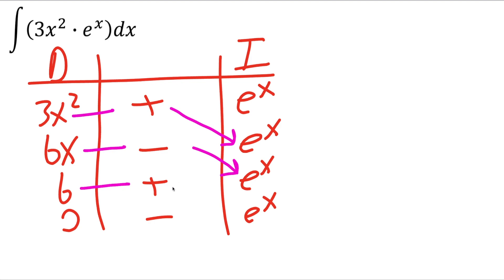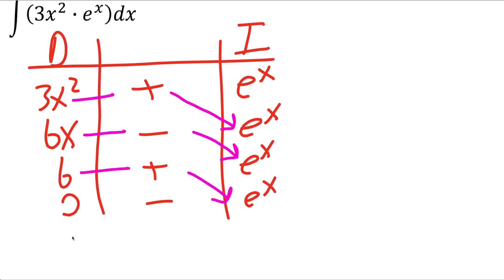6 times positive 1 times e raised to x. And so our final answer for this problem would be 3x squared e raised to x. 6x times negative e raised to x would be negative 6x e raised to x. And 6 times 1 times e raised to x would be positive 6 e raised to x. And don't forget the plus c.